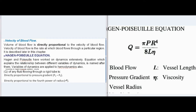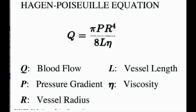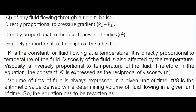Hagen-Poiseuille Equation: Hagen and Poiseuille worked on dynamics extensively. The equation explaining the relationship between different variables of dynamics is named after them, and its variables are also applied to hemodynamics. According to the Hagen-Poiseuille Equation, volume Q of any fluid flowing through a rigid tube is directly proportional to pressure gradient (P1 minus P2), directly proportional to the fourth power of radius (R⁴), and inversely proportional to the length of the tube (L). K is the constant for fluid flowing at a temperature and is directly proportional to temperature. Since viscosity is inversely proportional to temperature, the constant K is expressed as the reciprocal of viscosity, eta. Volume of flow is expressed in a given unit of time, and pi divided by 8 is the arithmetic value derived while determining volume of fluid flowing in a given unit of time.